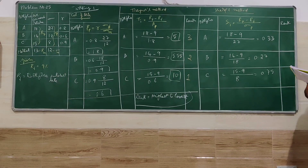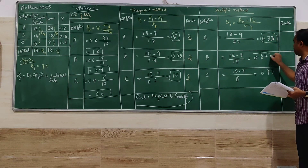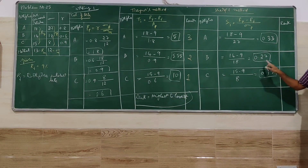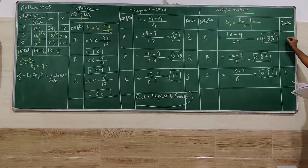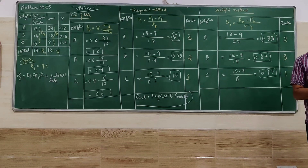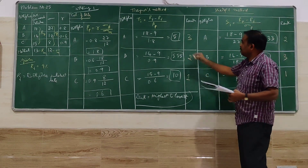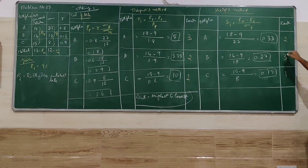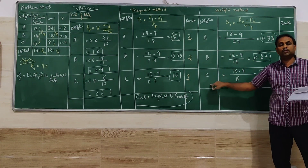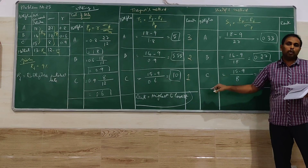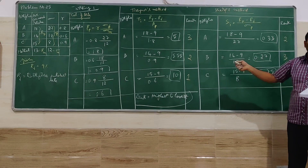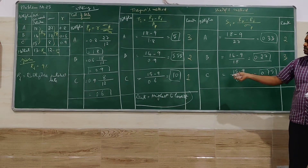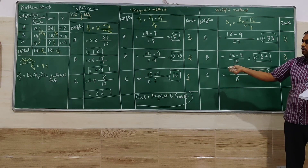Under Sharpe's method, the highest value is 0.75 for C (Rank 1), followed by 0.33 for A (Rank 2), and 0.27 for B (Rank 3). So under Treynor's method the ranking is C, B, A and under Sharpe's method it is C, A, B. The conclusion is that under both methods, portfolio C gives the best return and should be the preferred investment.